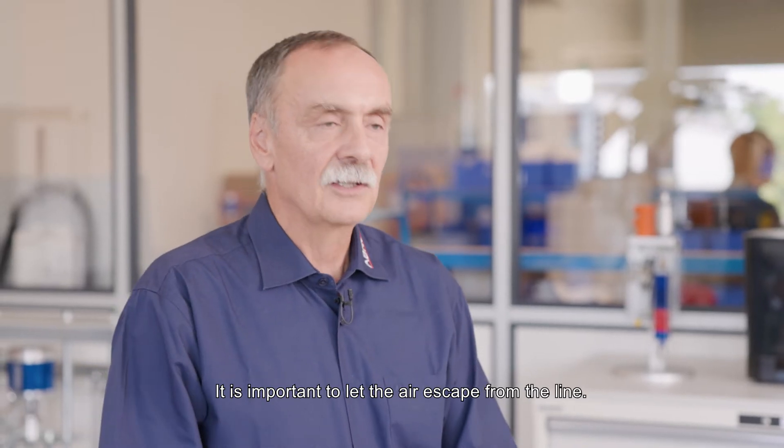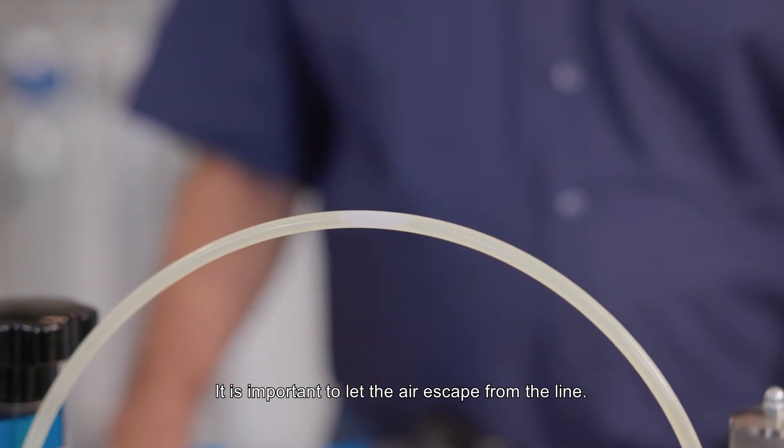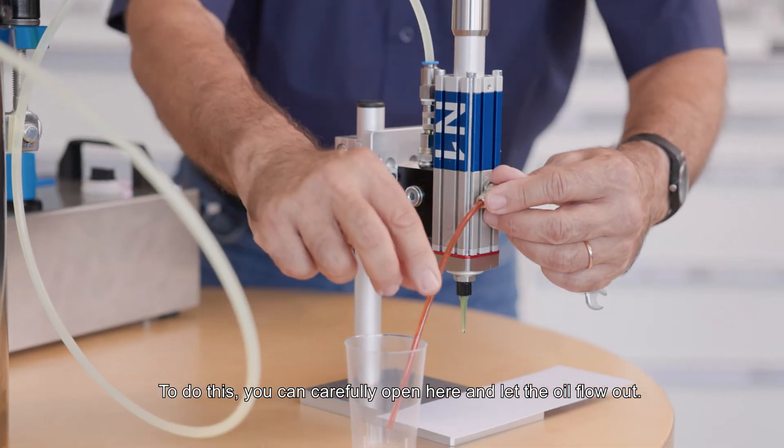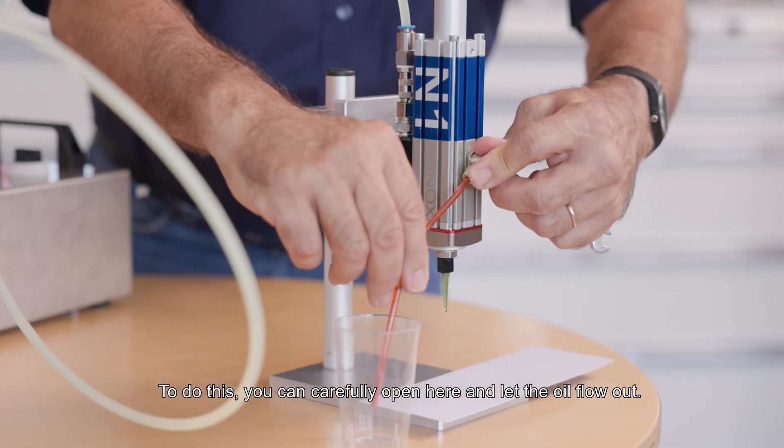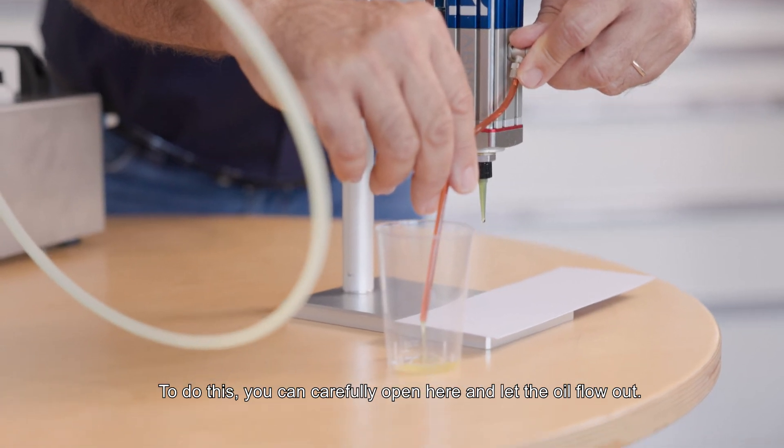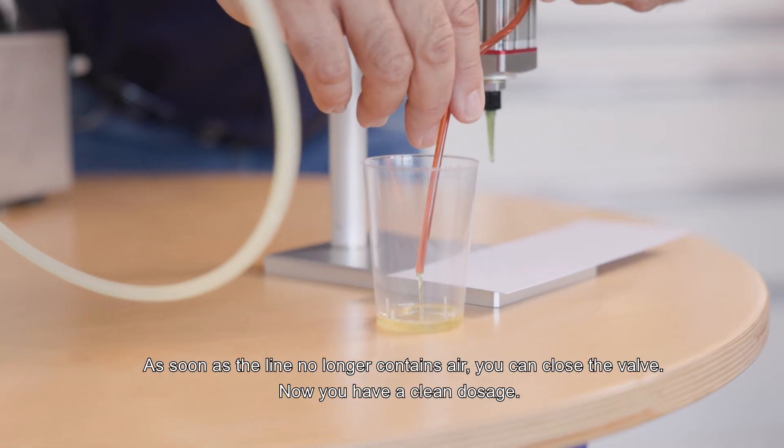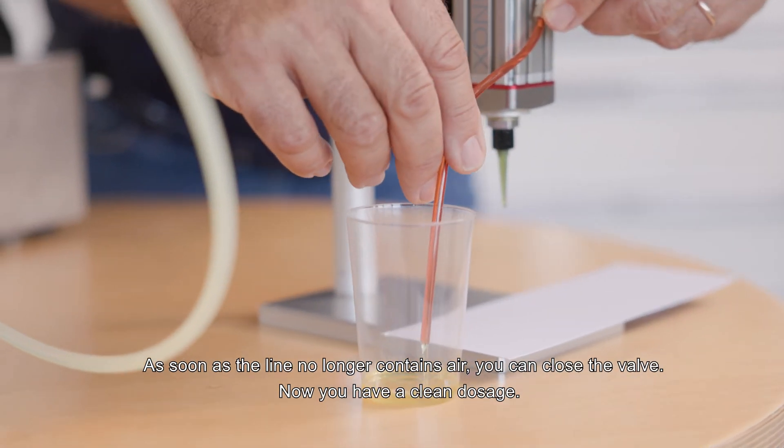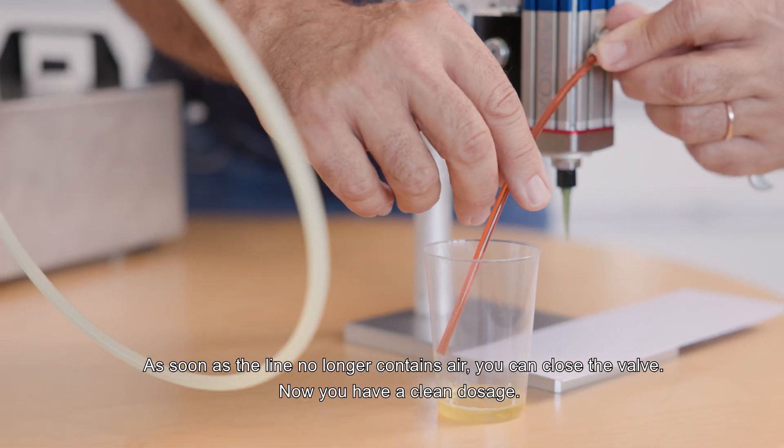It is important to let the air escape from the line. To do this, you can carefully open here and let the oil flow out. As soon as the line no longer contains air, you can close the valve. Now you have a clean dosage.